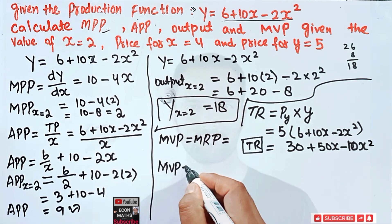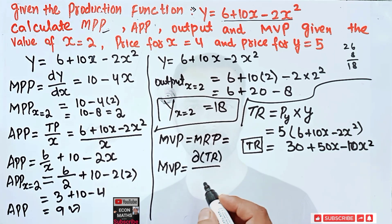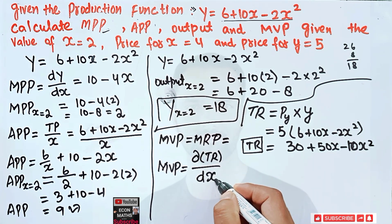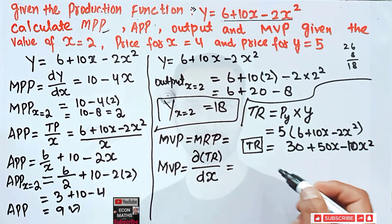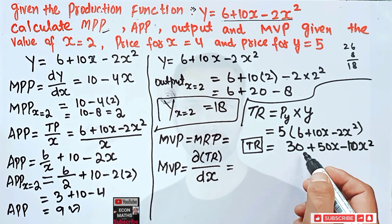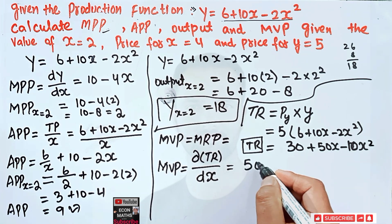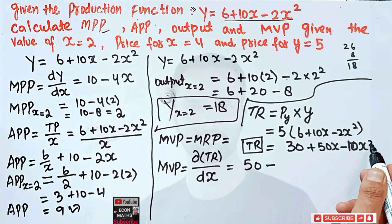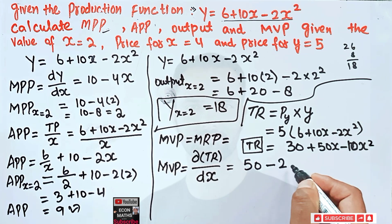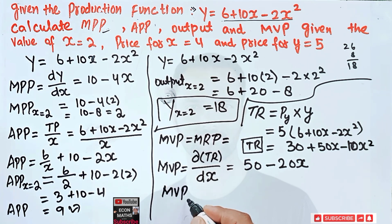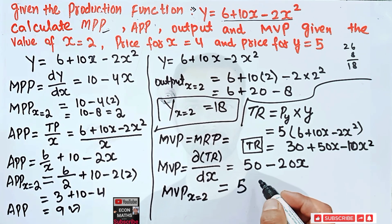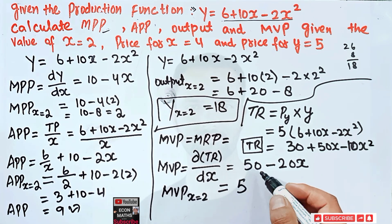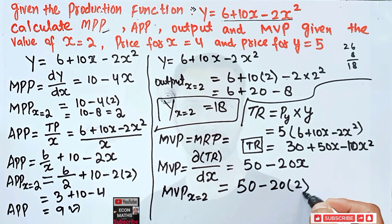Marginal value product is simply the derivative of total revenue with respect to x — it tells us how much total revenue changes when input changes. Differentiating: the derivative of 30 is 0, derivative of 50x is 50, and derivative of 10x² is 20x. So MVP = 50 - 20x. When x = 2, MVP = 50 - 20(2) = 50 - 40 = 10. So our marginal value product is 10.